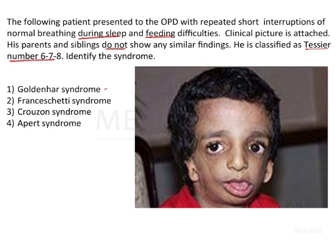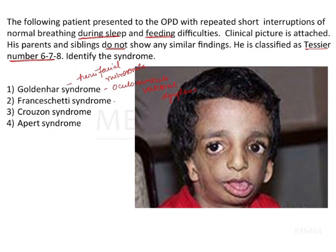Let us understand what these syndromes are. Goldenhar syndrome is oculo-auriculo-vertebral dysplasia. It is associated with hemifacial microsomia, which means the affected side of the face shows underdeveloped organs. The organs affected include the orbit, eyes, and vertebrae. Therefore, Goldenhar syndrome is characterized by hemifacial microsomia as one of its manifestations.